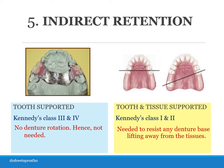Indirect retention: in tooth supported RPDs — class 3 cases — the fulcrum line that may cause denture rotation does not practically exist, so indirect retention is not needed. While in tooth tissue supported RPDs, the fulcrum line passes from the distal rests of the abutment teeth, so indirect retention is needed to resist any denture base lifting away from the tissues. The most preferable position of indirect retention is shown by the arrows in the images. Details of fulcrum lines and RPD movement are discussed in the biomechanics lecture linked in the description.